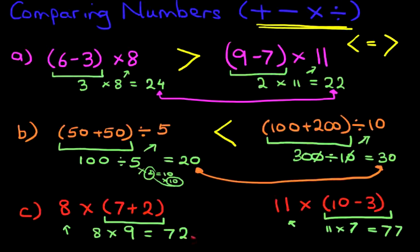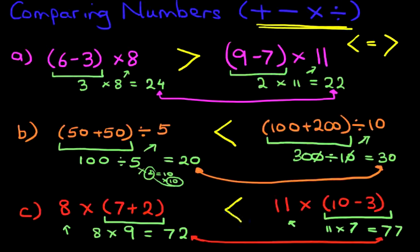So we are now comparing 72 with 77. Which number is smaller and which is larger? Well, 72 is smaller, so therefore the arrow points in this direction. And that is how we compare numbers with addition, subtraction, multiplication, and division.